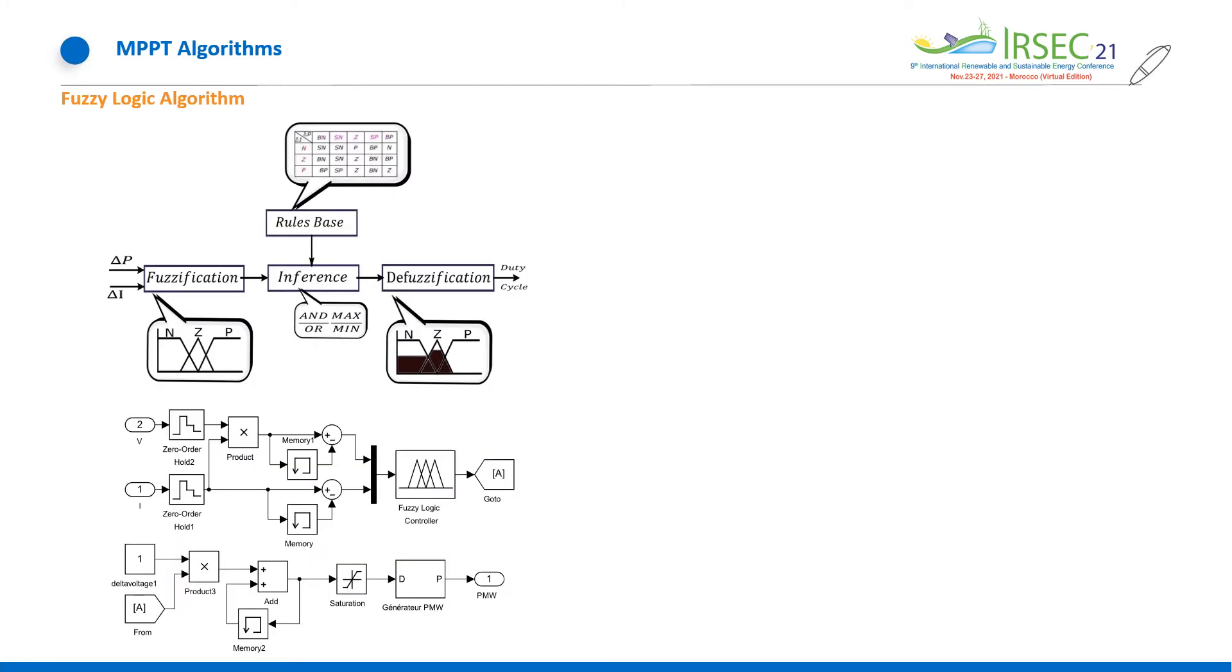Concerning fuzzy logic, it's among the most effective methods used in the literature. This algorithm mimics the human reaction strategy and exhibits multiple advantages. The process of fuzzy logic follows these three steps: fuzzification, inference, and defuzzification.